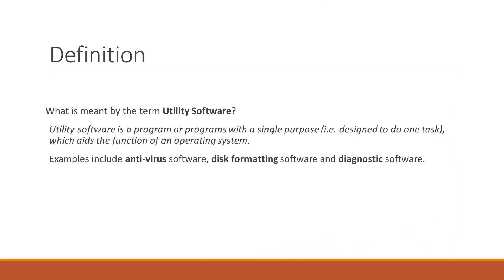We will start by defining what utility software is. Utility software is a program or programs with a single purpose, designed to do one specific task, which aids the function of an operating system. Examples include antivirus software, disk formatting software, and diagnostic software.